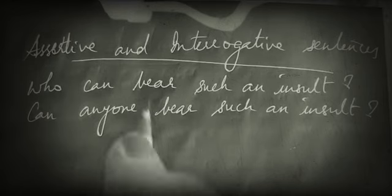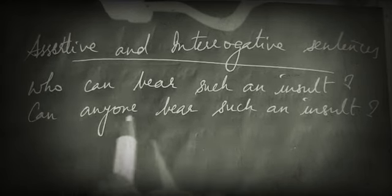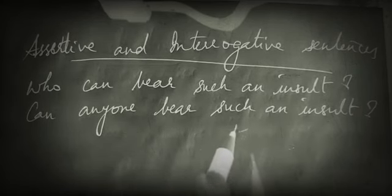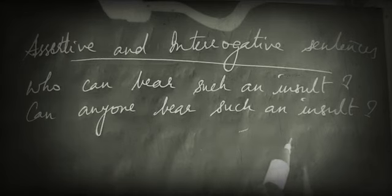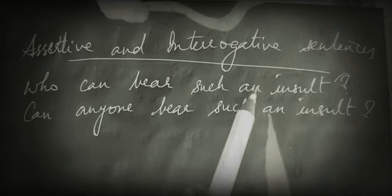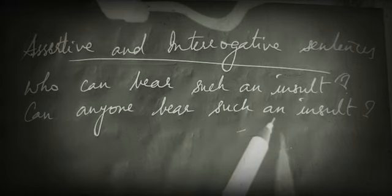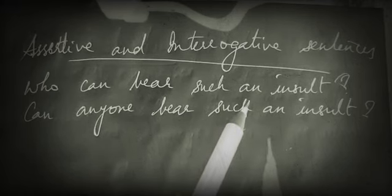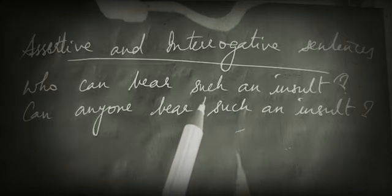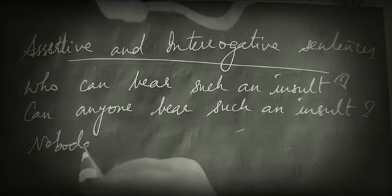In substance, such a sentence is an emphatic statement. For example, 'Who can bear such an insult?' — you can see this is interrogative in form, but it is not framed to collect any sort of information. It is framed to make an emphatic statement.